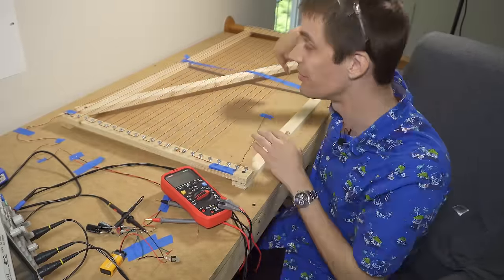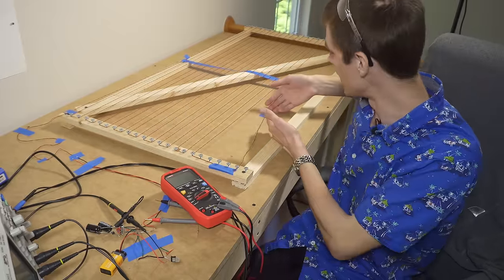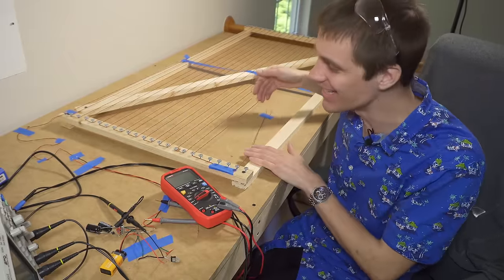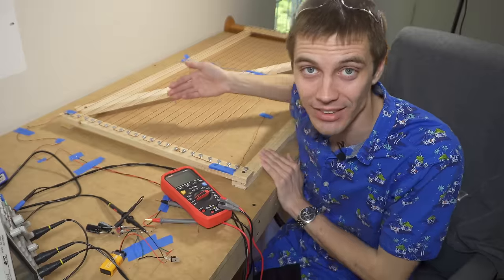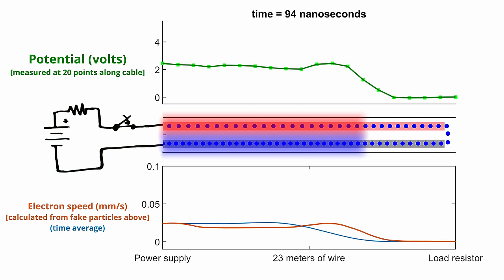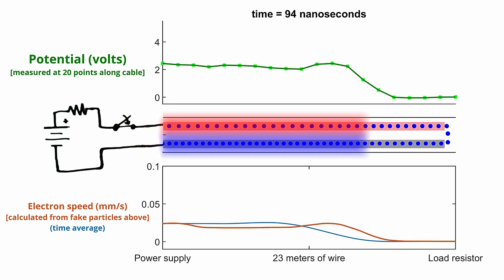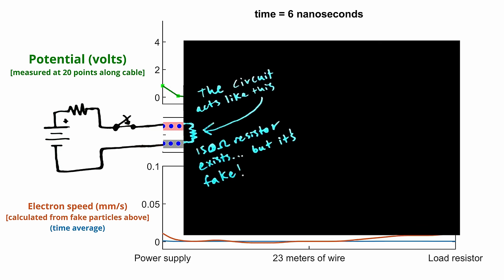This state where the wires look like they're connected, but only sort of can only exist briefly because once we've packed as many electrons as we can into one wire and depleted as many electrons from the other wire as we can, this process stops. And at that point, the electrons have to flow through the entire loop. They have to go through this load. Or if the load is infinity, if the wires are disconnected, the electrons just stop moving. So the 150 ohm resistor is just a placeholder.